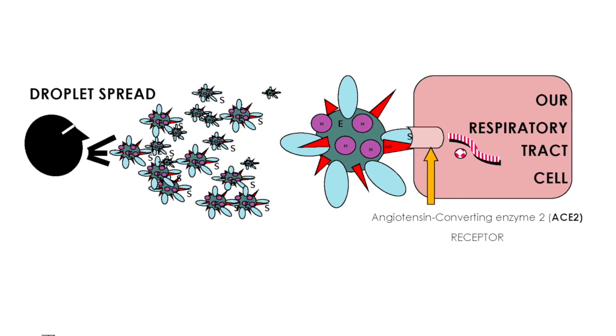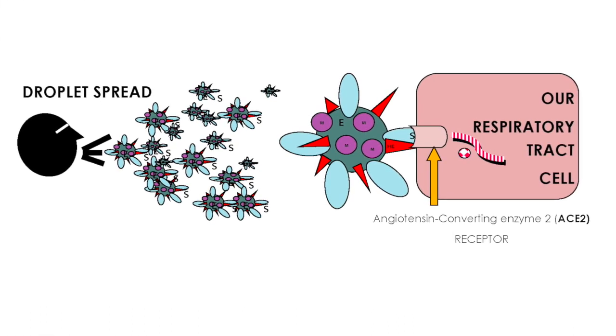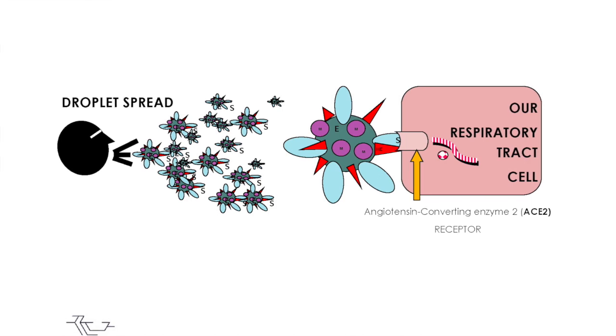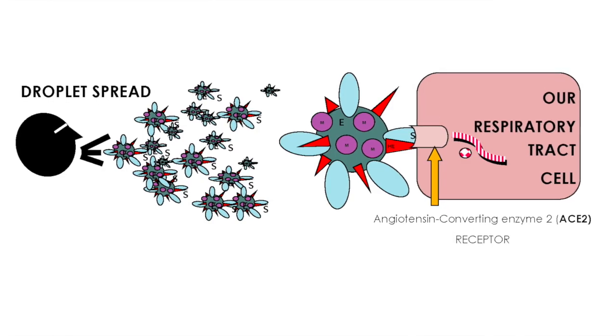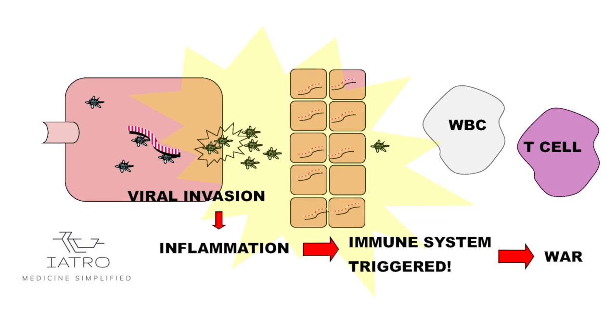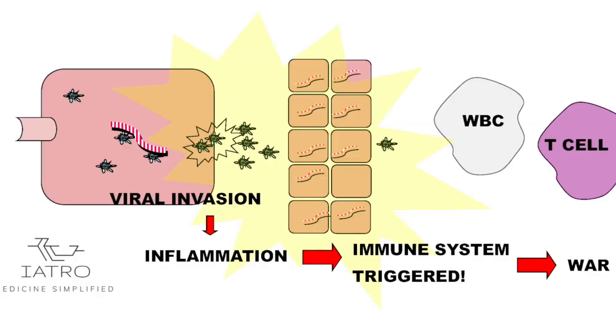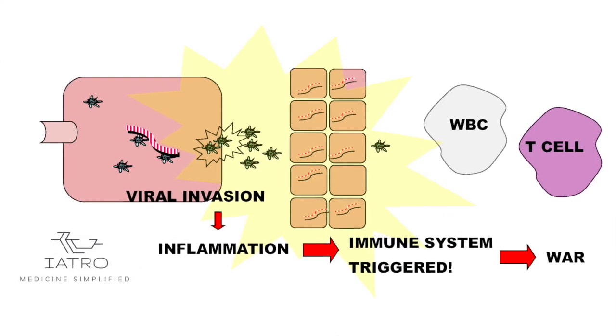The virus also has an M protein providing structural curvature, and an envelope protein around it. Inside is the RNA with the N protein. The spike attaches to the ACE2 receptor in our respiratory tract, and together with the HE protein, inserts the virus into our cells. Once inside, the virus releases its RNA — think of it like coding — it codes to create more of itself. It replicates, making more and more copies until the cell pops and releases more viruses.